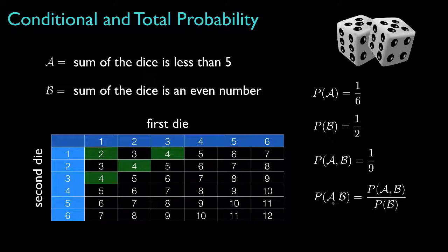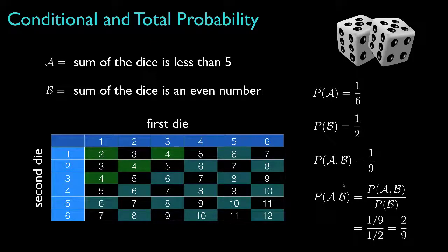The conditional probability for A, conditional on B occurring, is the joint probability for A and B divided by the probability for B, the conditioning event. For this example, this would be one ninth divided by one half, or two ninths. Graphically, we can see that 18 outcomes satisfy the condition that the sum is even, but of those, only four satisfy the condition that the sum is less than five. Therefore, the conditional probability is four out of 18, or two ninths, just as shown with the formula.